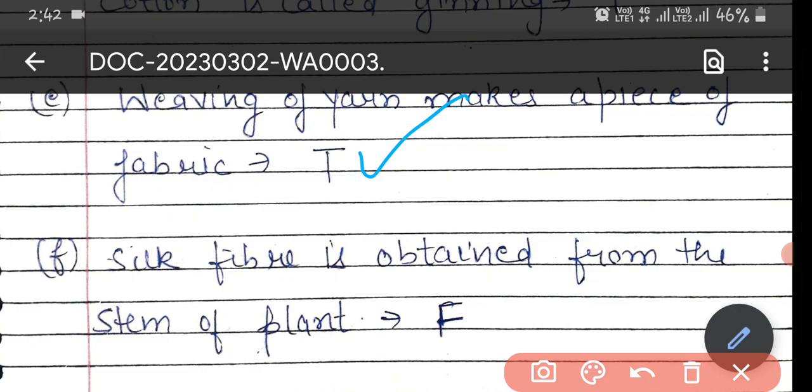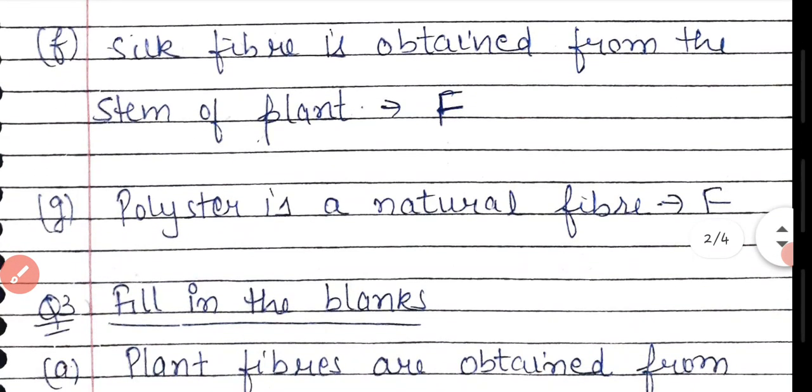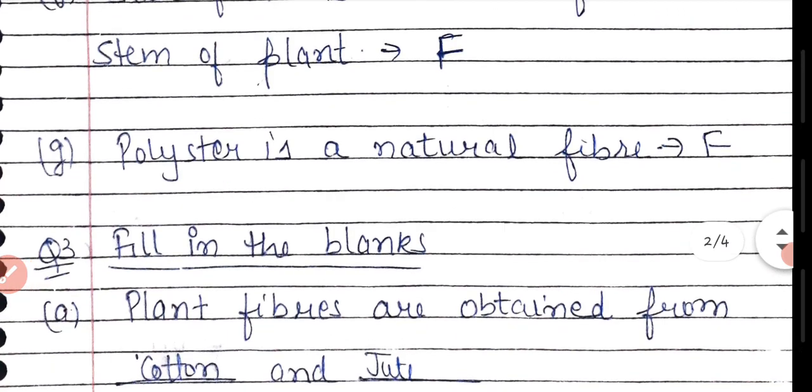The statement that silk fiber is obtained from the stem of plants is false—silk comes from silkworms. Jute comes from stems. Polyester is not a natural fiber like wool, cotton, jute, and silk. Polyester is a synthetic fiber, which is a man-made, chemical fiber. This statement is false.